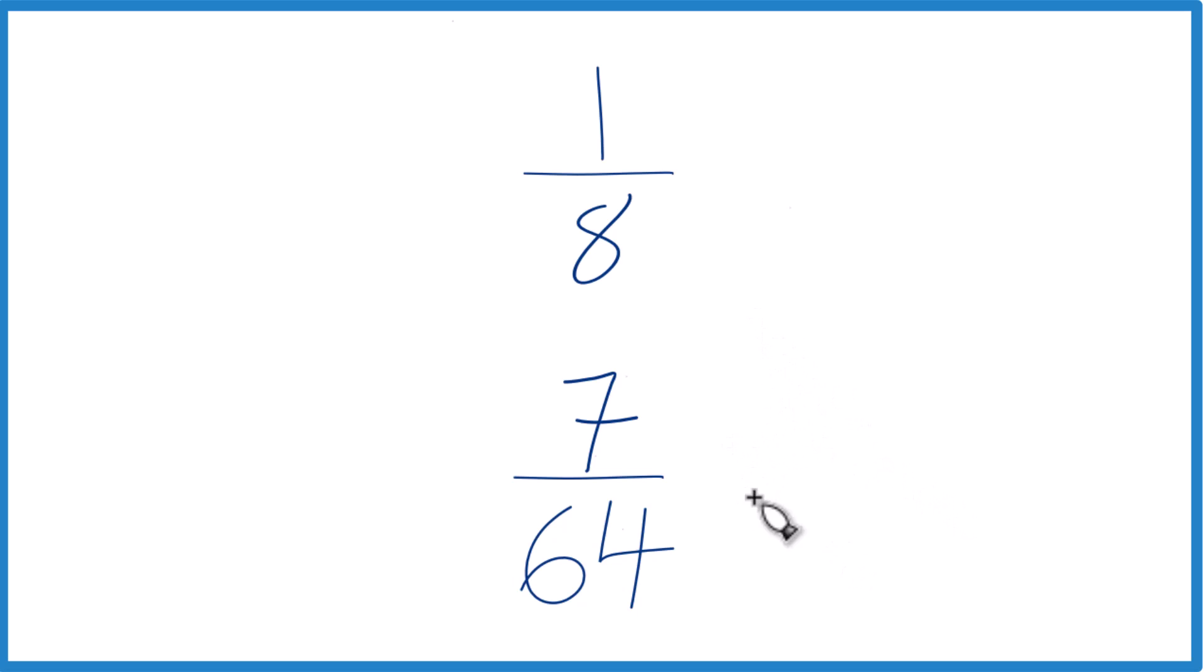The other way is to find a common denominator. Right now we have 64 and 8, but if these were the same, we could just compare the numerators and we'd know if 1/8th was greater than or less than 7/64ths.